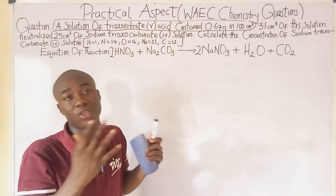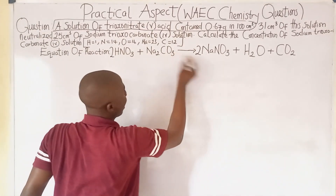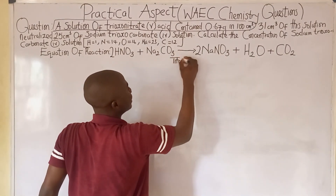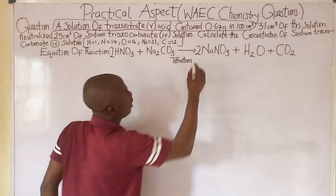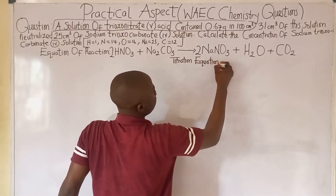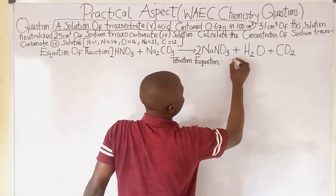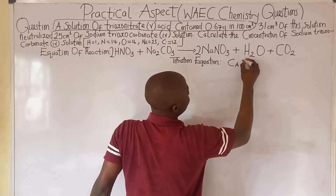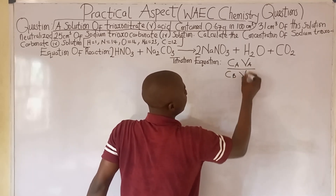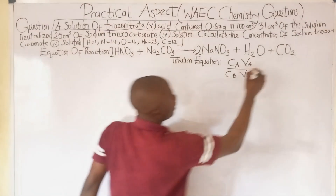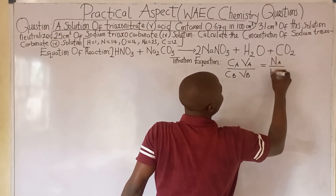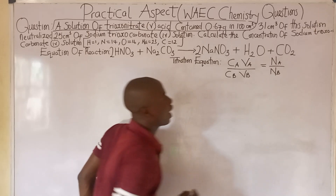First thing we have to do is write the titration equation, also called the titration formula, which is: CₐVₐ / CᵦVᵦ = nₐ / nᵦ.